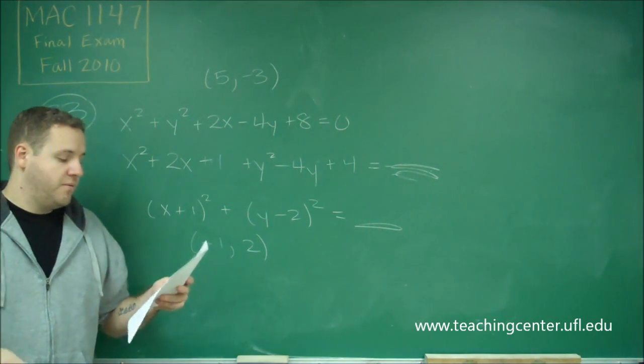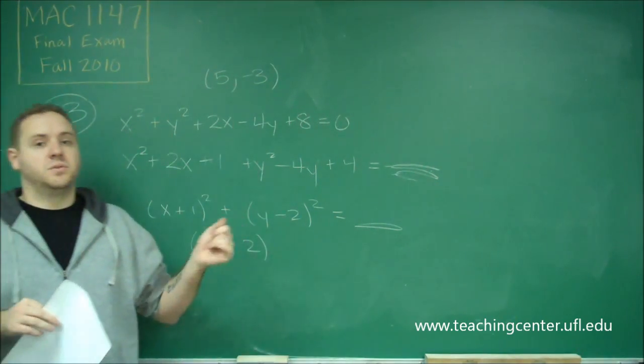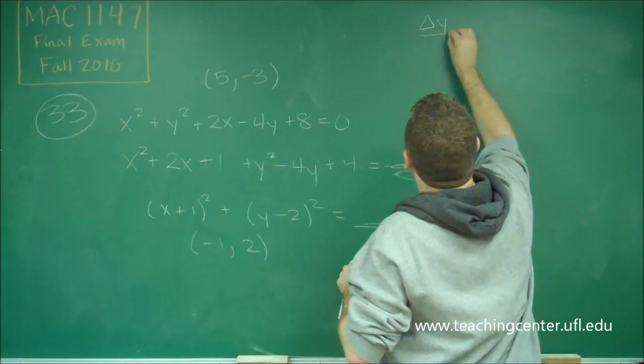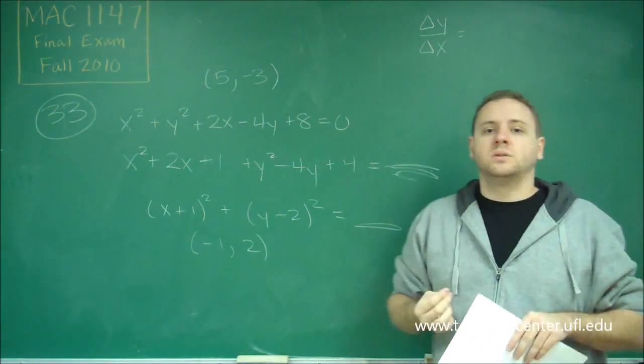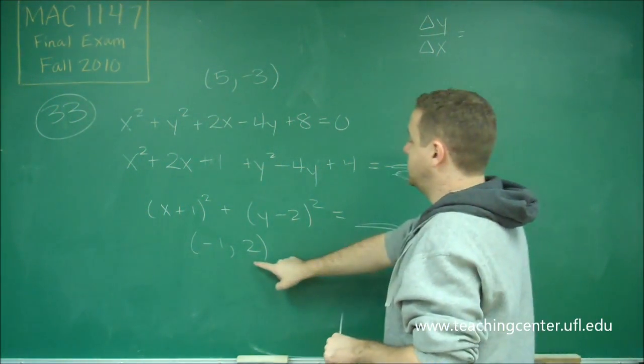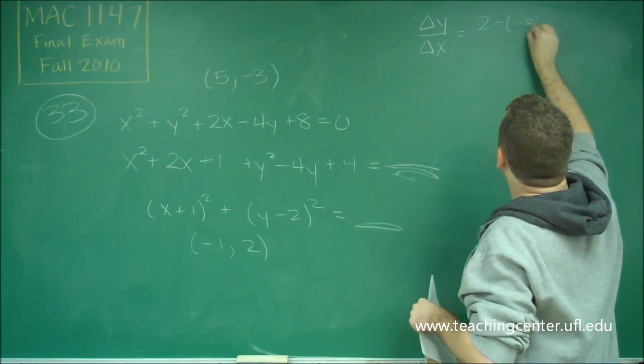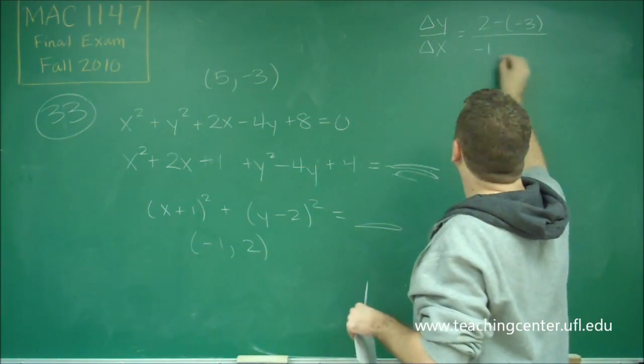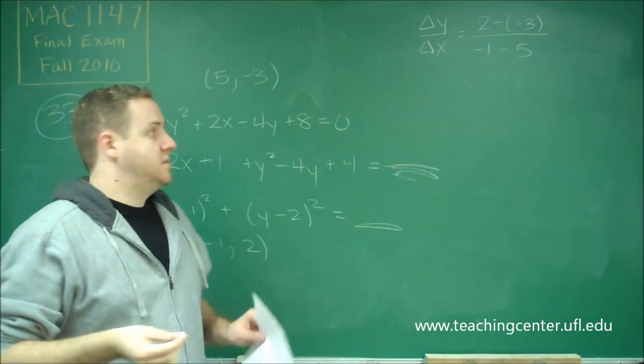So now, the question has just become, find the slope of the line that passes through this point and that point, and now we can just use our regular slope formula. So slope is delta y over delta x. It doesn't matter which point you call point 1 and point 2, as long as you do it in the same direction both times. So let's do 2 minus negative 3. And on the x's, we have negative 1 minus 5. So those are our change in y and change in x, and now we just need to figure out what that is.